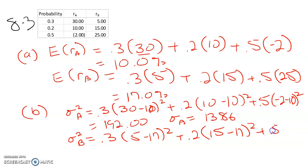plus 0.5 times 25 minus 17 squared. So that is 76.